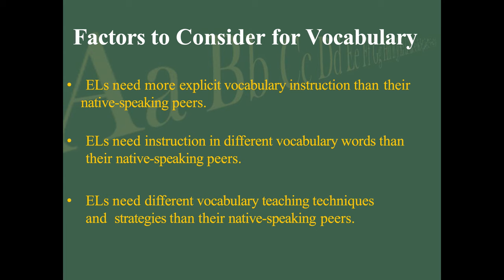Tier one words are the common, everyday vocabulary you use to move around in the world — desk, car, clock, window, things like that. Tier two words are words that transfer across situations — you might hear them in history but also in biology. Examples would be words like 'compare' or 'analyze' — words they'll see in a lot of different situations. Tier three words are specific to a particular area: if you're talking about photosynthesis or osmosis, those are tier three vocabulary words because they are specific to one discipline.